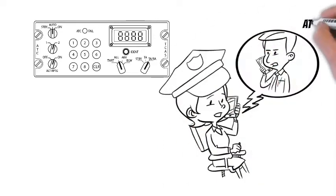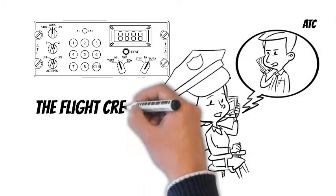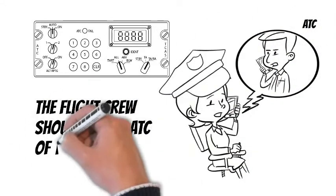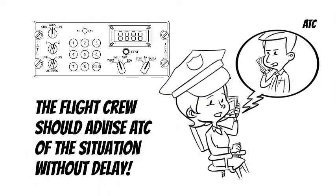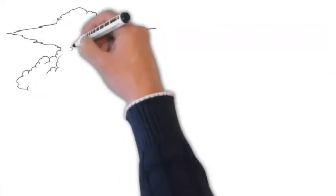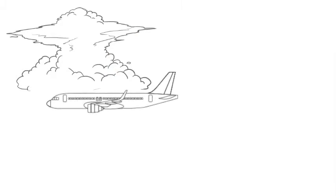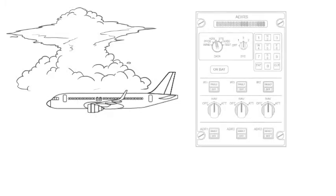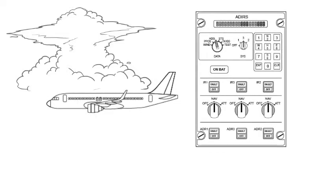Because the barometric altitude may be erroneous, the autopilot (AP) may not accurately maintain the flight level. The Unreliable Speed Indication procedure has two objectives: first, to fly the aircraft; and second, to identify and isolate the affected ADR or ADRs.